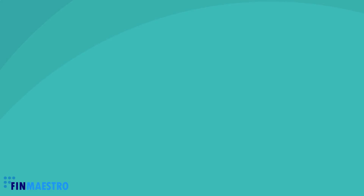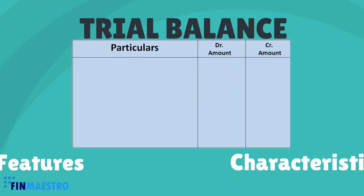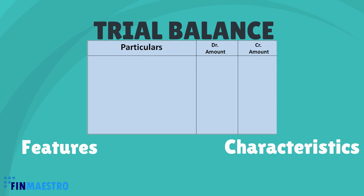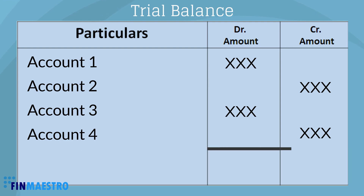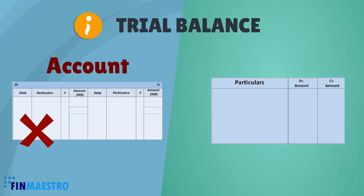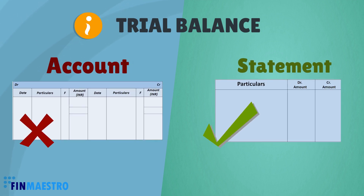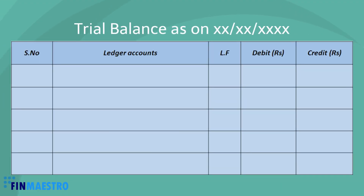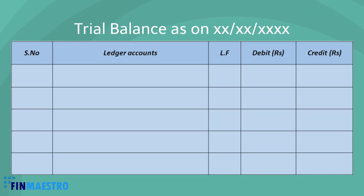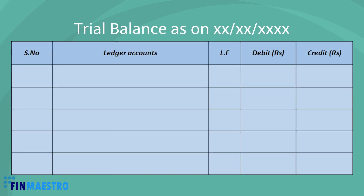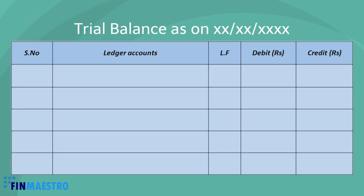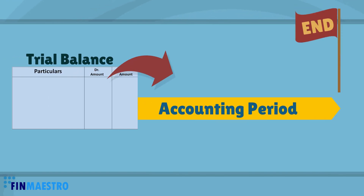Let's get familiarized with trial balance and see some features and characteristics. Trial balance is a statement in which the balances of all ledgers are compiled into debit and credit columns. Note that trial balance is not an account — it is just a statement summarizing all the ledger accounts. This is how a typical trial balance would look. See the header: 'Trial Balance as on a particular date.' Trial balance is always prepared as on a particular date, usually at the end of the accounting period.